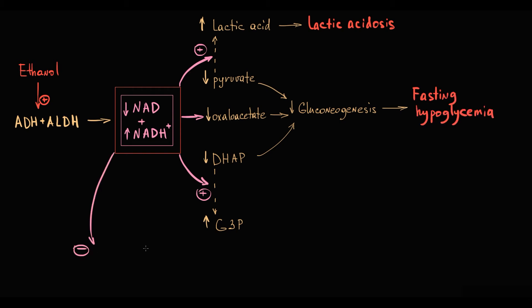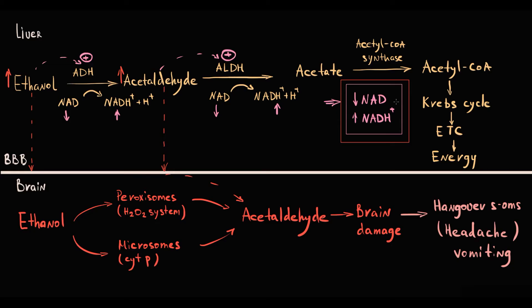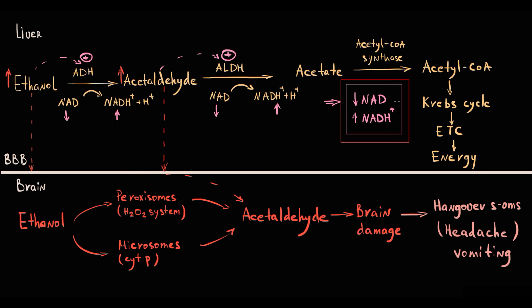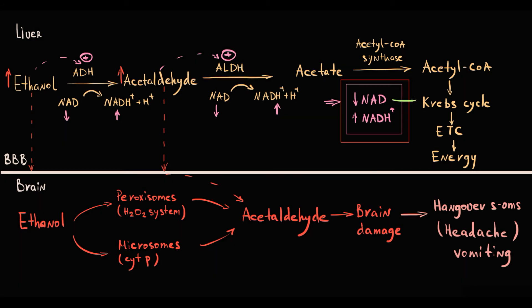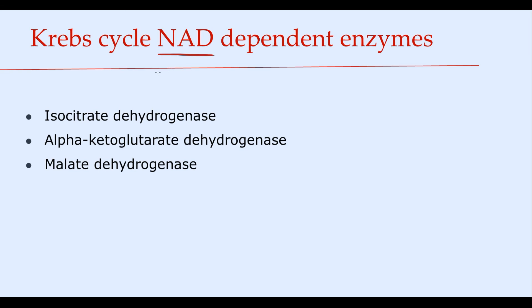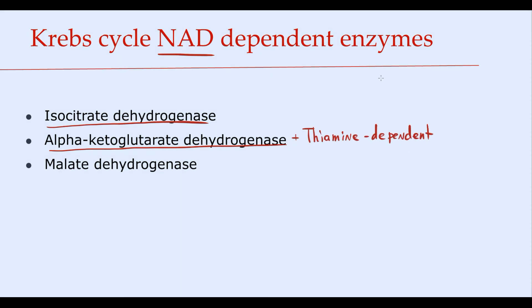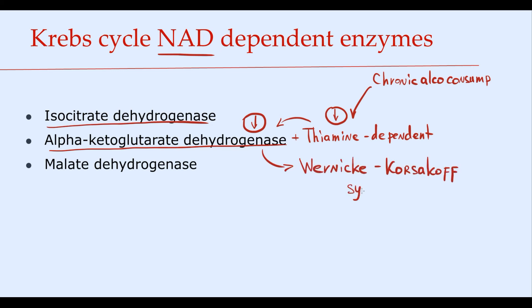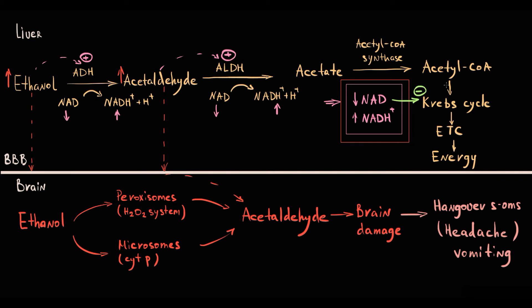The high NADH/NAD+ ratio also inhibits the Krebs cycle. Because metabolism of ethanol by ADH and acetaldehyde dehydrogenase consumes massive amounts of NAD+, it depletes cellular NAD+ stores, thereby inhibiting all pathways that require NAD+ as a cofactor. The Krebs cycle has three enzymes that exclusively use NAD+: isocitrate dehydrogenase, alpha-ketoglutarate dehydrogenase, and malate dehydrogenase. Notably, alpha-ketoglutarate dehydrogenase is also thiamine-dependent, and chronic alcohol consumption can cause severe thiamine deficiency, potentially resulting in Wernicke-Korsakoff syndrome. Thiamine deficiency inhibits this enzyme even further, and together the decrease in NAD+ causes inhibition of the entire Krebs cycle.